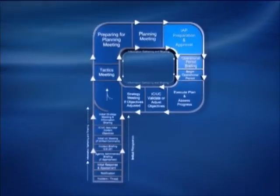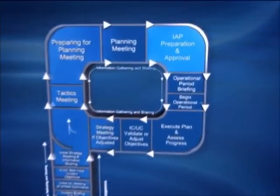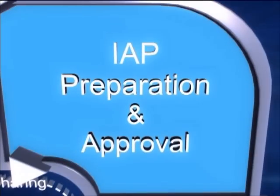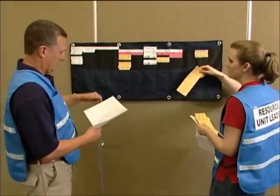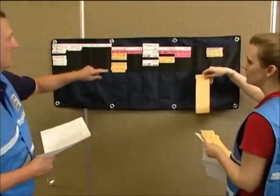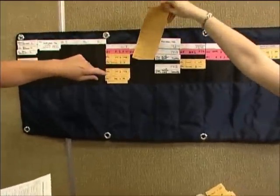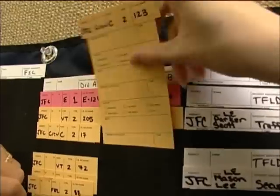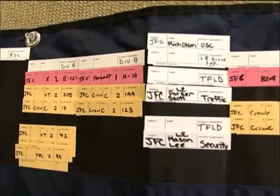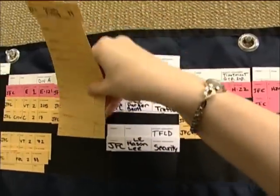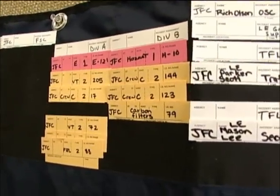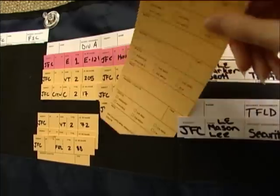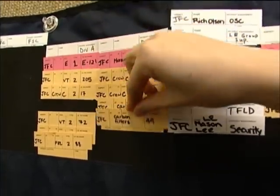After the planning meeting, the next step is preparation of the Incident Action Plan, or IAP. Most members of the IMT have some kind of document to prepare for the IAP. The Operations Section Chief works with the Planning Section to ensure the Division Group assignment sheets are filled out properly and may also assign certain resources to specific tactical activities.